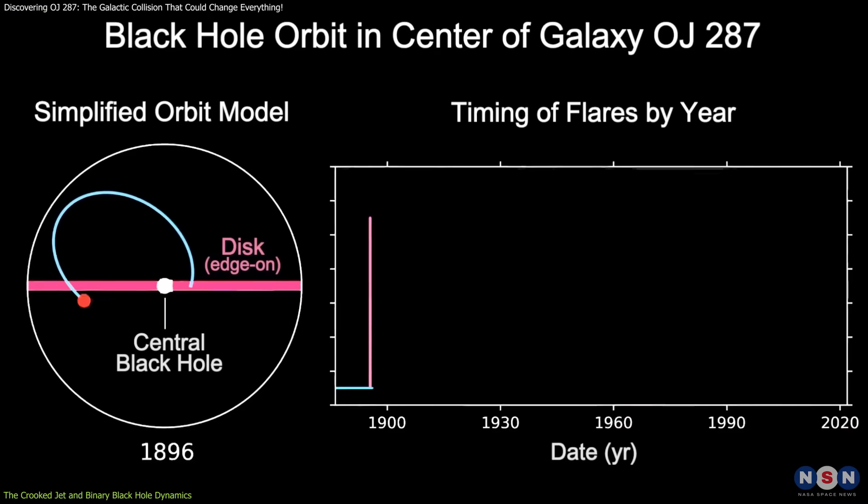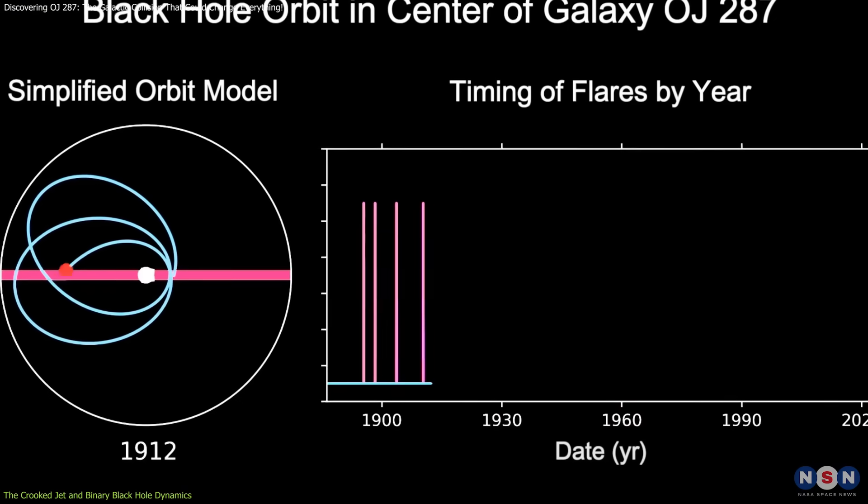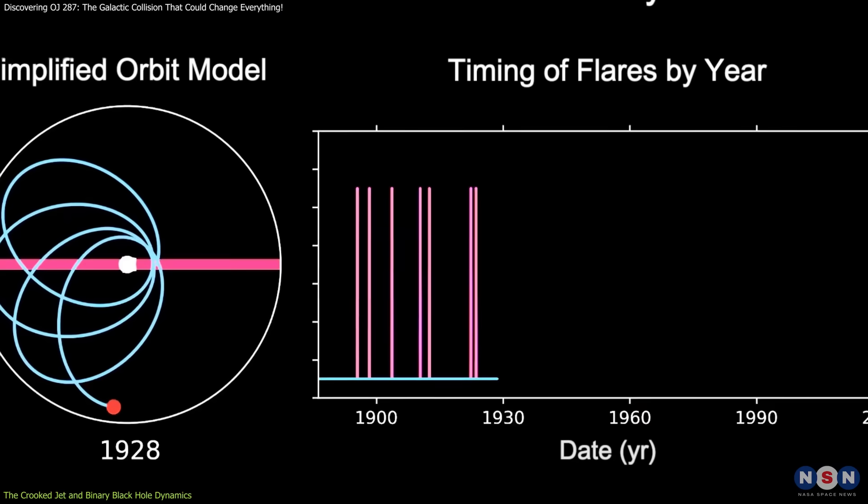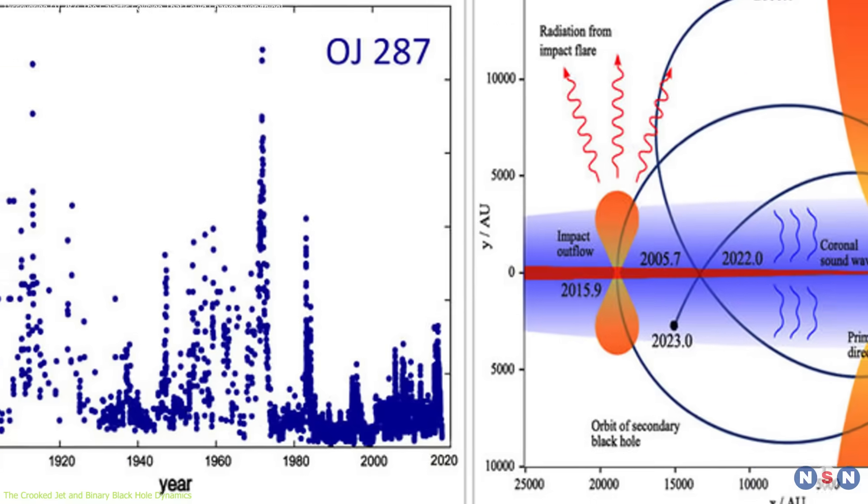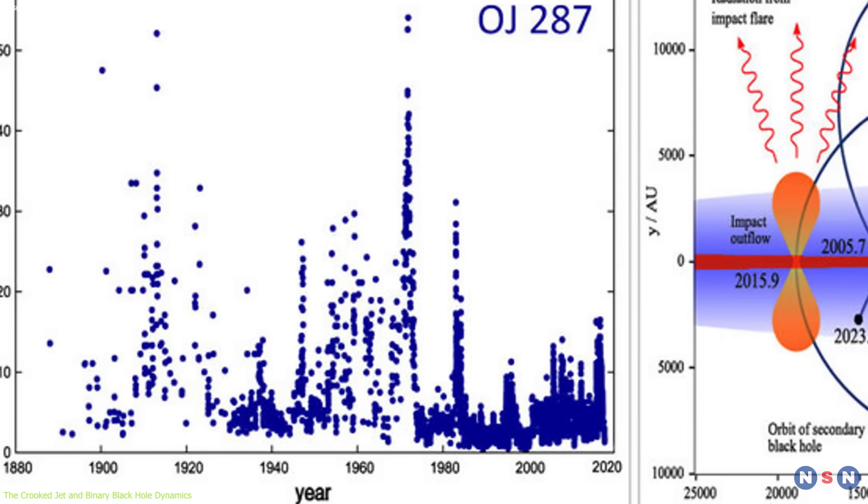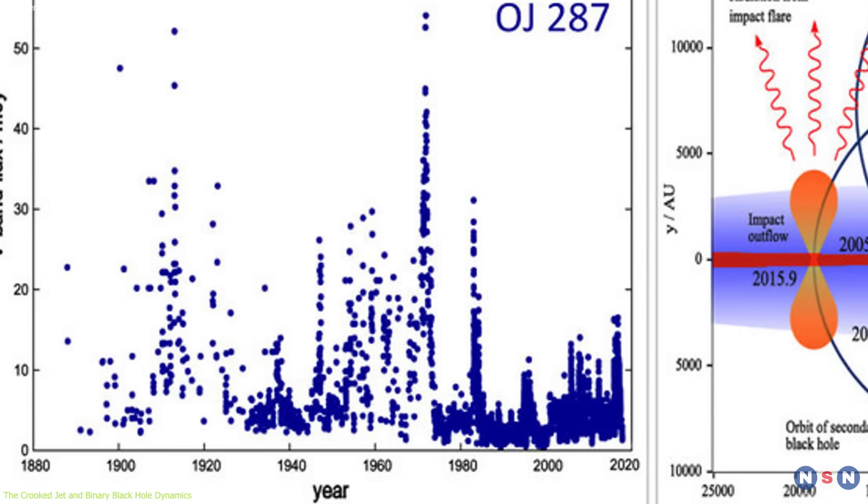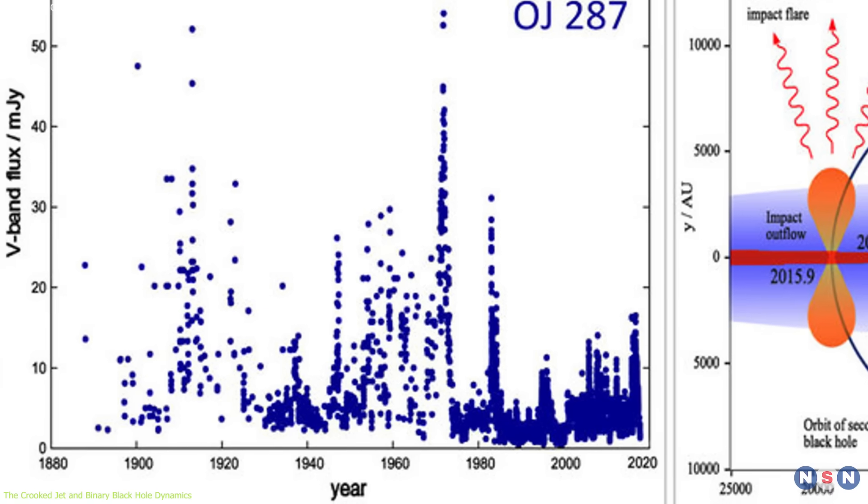During this encounter, the smaller black hole disturbs the flow of matter in the accretion disk, causing bursts of energy. This dynamic interaction leads to significant variations in the brightness of the system, which has been tracked over more than 150 years.